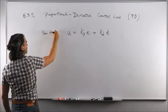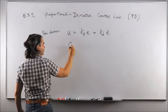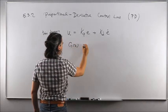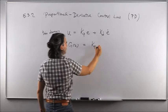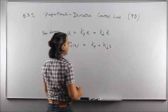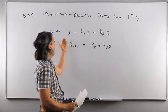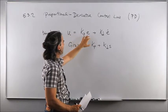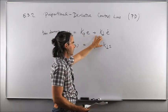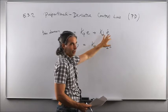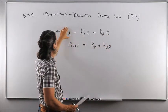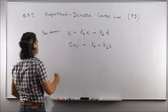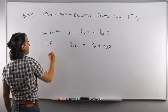The transfer function of the PD controller is G(s) = Kp + Kd·s, obtained by taking the Laplace transform: U(s) = Kp·E(s) + Kd·s·E(s), so G(s) = U(s)/E(s) = Kp + Kd·s.